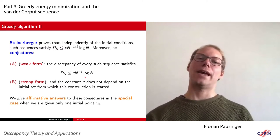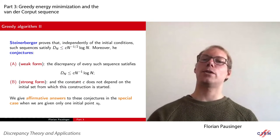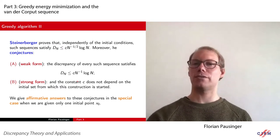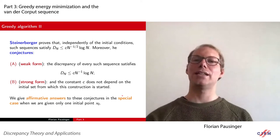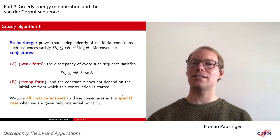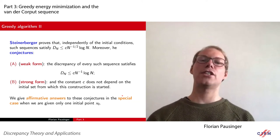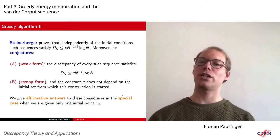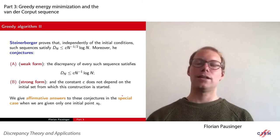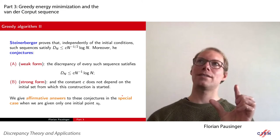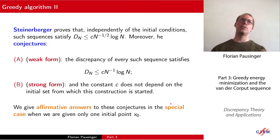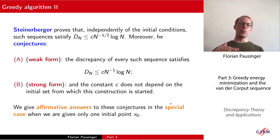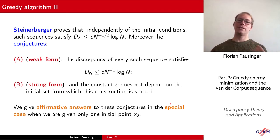actually satisfies the bound n to the minus one times log n. So he conjectures that these sequences are actually low-discrepancy sequences, and even more, he conjectures that there is a constant that does not depend on the initial segment from which this construction is started. What he is saying is: start with any set of points, let the algorithm do its job, and asymptotically you arrive at a sequence with the same distribution, independent of the initial perturbation. He suggests this procedure somehow self-regulates.